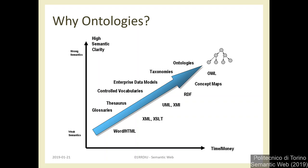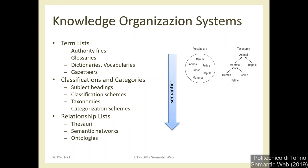Reasoning on RDF delivers limited results. When we move to higher-level semantics, there's a larger effort in modeling information, but we can express more knowledge and gain more insight after running a reasoner. Ontologies are just one of many levels of information representation. I have a slide to remind ourselves not to overshoot when modeling — don't make it more complex than you need. 'Just enough semantics' is what you need.